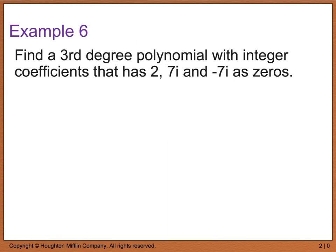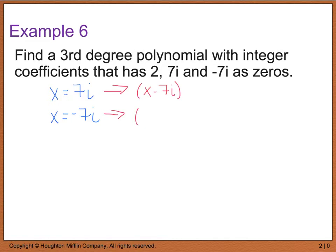Example 6 says to find a third-degree polynomial with integer coefficients that has 2, 7i, and negative 7i as the zeros. What I would do is start out with the complex pieces first. You know that x equals 7i and x equals negative 7i. We need to convert these over to factors. If x equals 7i, then x minus 7i is a factor. And likewise, if x equals negative 7i is a zero, then x plus 7i is also a factor.